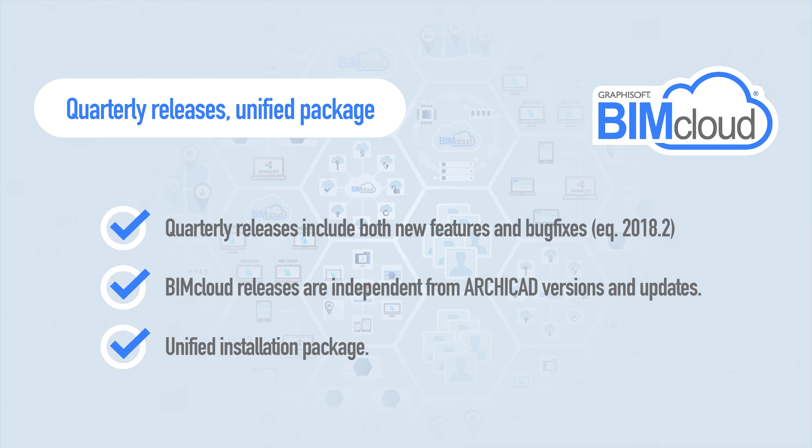BIMcloud will have quarterly releases. Such releases will feature both improvements and bug fixes. Release names will include year and release number — for example, 2018.1, 2018.2, and so on. BIMcloud releases are independent from ArchiCAD versions and updates. You can install ArchiCAD updates anytime without the need to also update your BIMcloud at the same time. BIMcloud has a unified installation package, of which a new version will be released every few months. The same package will include both BIMcloud and BIMcloud Basic with all the latest improvements.